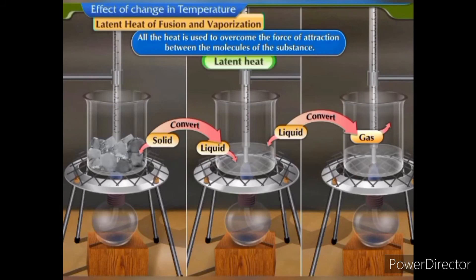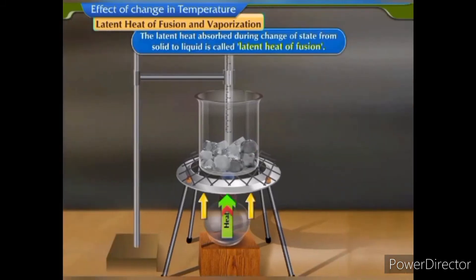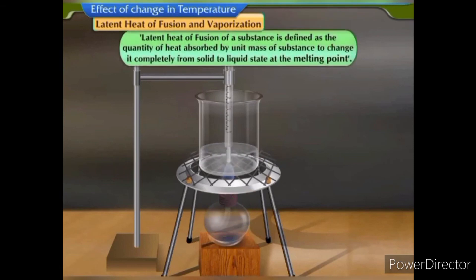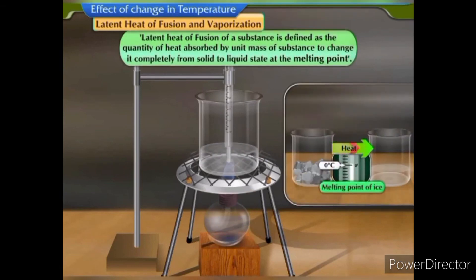This heat is called latent heat. The latent heat absorbed during change of state from solid to liquid is called latent heat of fusion. Latent heat of fusion is defined as the quantity of heat absorbed by unit mass of a substance to change it completely from solid to liquid state at the melting point.